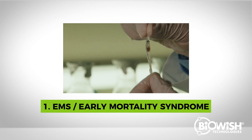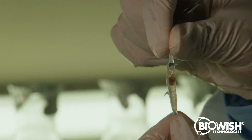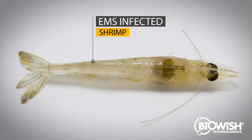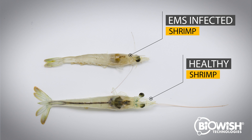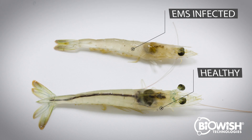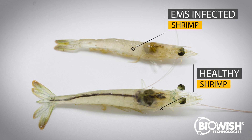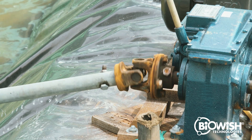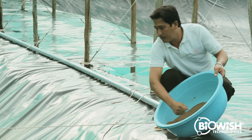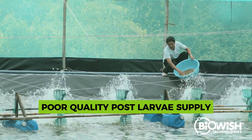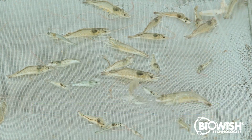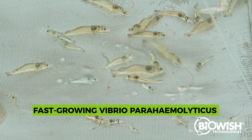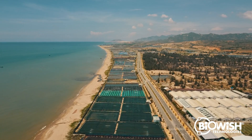Early Mortality Syndrome or EMS, also known as AHPNS, is caused by a specific Vibrio bacteria called Vibrio parahemolyticus. If preventative steps aren't taken, it can quickly wipe out entire shrimp populations in a matter of days. Small shrimp younger than 45 days of age are most at risk. There are many factors which help contribute to EMS, such as poor quality post-larva supply, poor water quality, stress from cold water temperatures, and the dominance of fast-growing Vibrio parahemolyticus in pond water which can outcompete slower-growing beneficial bacteria.